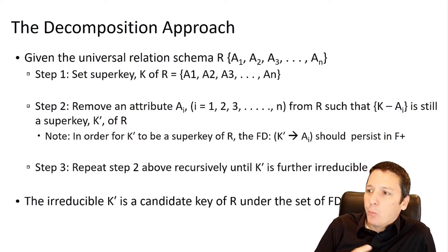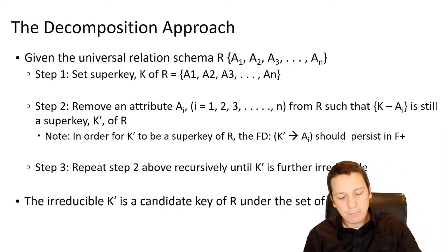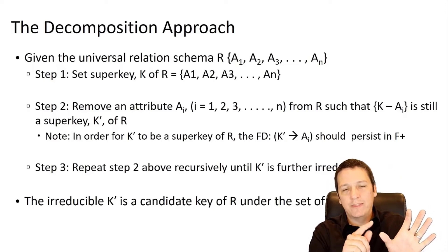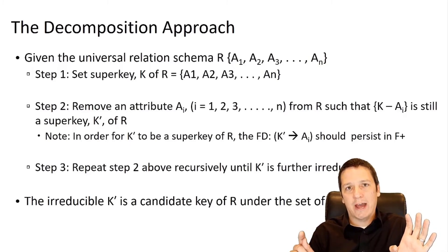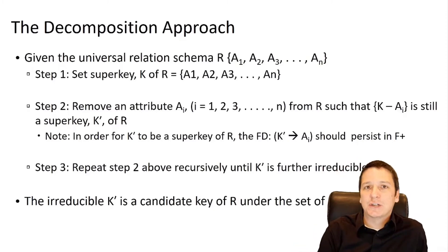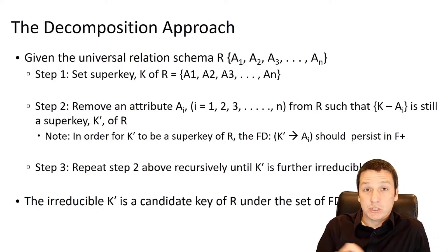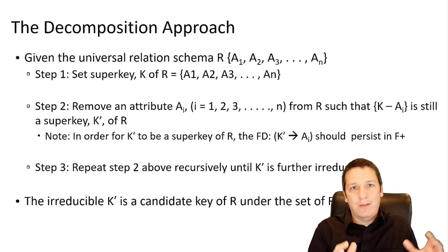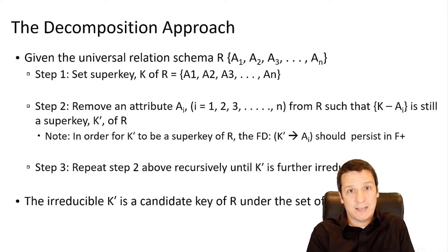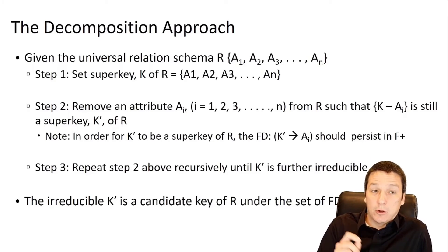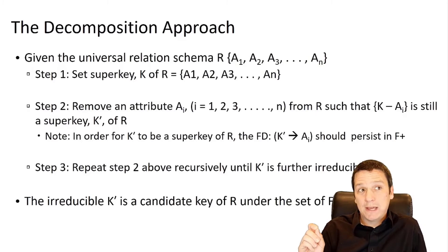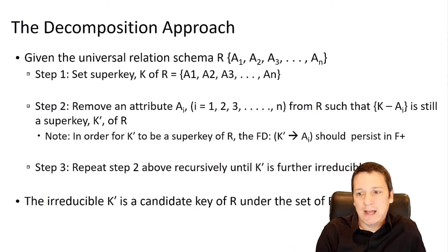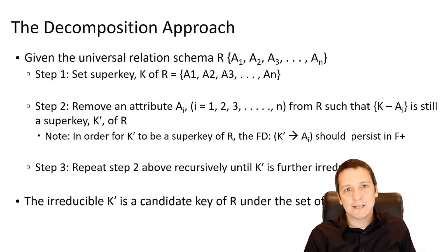The combination of every attribute in the relation has the property of uniqueness, so we start by saying every attribute together is a superkey. Now we remove attributes one at a time and ask: can that superkey minus the removed attribute functionally determine the attribute we just removed? If yes, then the new set without that attribute is still a superkey. We remove attributes until the superkey is irreducible, at which point it is a candidate key. If the remaining set cannot determine the removed attribute, that attribute must be added back.